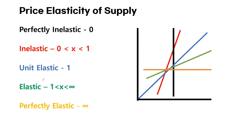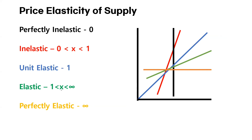The fourth one is elastic, referring to a situation in which the calculated elasticity is between one and infinite, the same as demand. The fifth one is perfectly elastic, referring to a situation in which the calculated elasticity is infinite, same as demand.